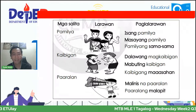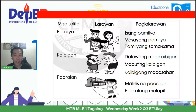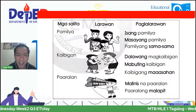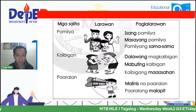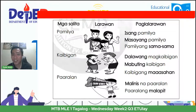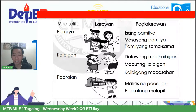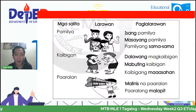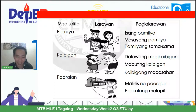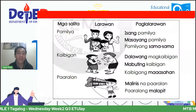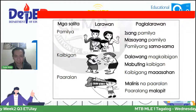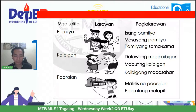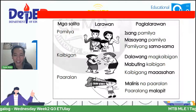Pwedeng isang pamilya. Pwedeng masayang pamilya. Pwedeng pamilya sama-sama. Ito ang paglalarawan sa pamilyang ito. Ikalawa, kaibigan — ang nakikita ninyo sa larawan, ano ang maaaring paglalarawan? Ang paglalarawan ay maaaring dalawang magkaibigan. Pwedeng mabuting kaibigan. Pwede rin kaibigang maaasahan.